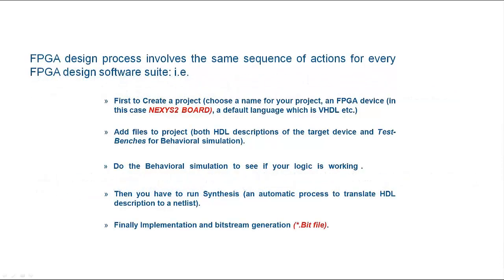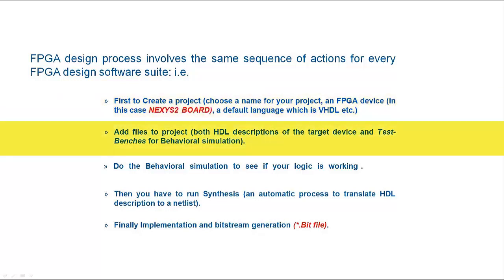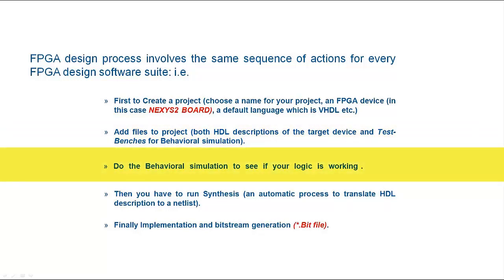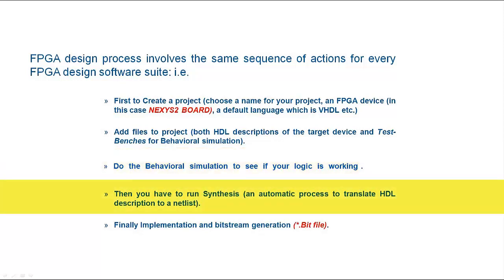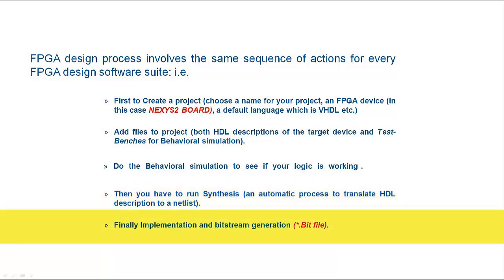The FPGA design process involves the same sequence of actions for every FPGA design software suite. That is: first, create a project and choose a name for your project, an FPGA device — in this case a Nexys 2 board — a default language which is VHDL. Then add a file to the project, both HDL description of the target device and test benches for behavioral simulation. Do the behavioral simulation to see if your logic is working. Then run synthesis. Finally, implementation and bitstream generation is the follow-up step.